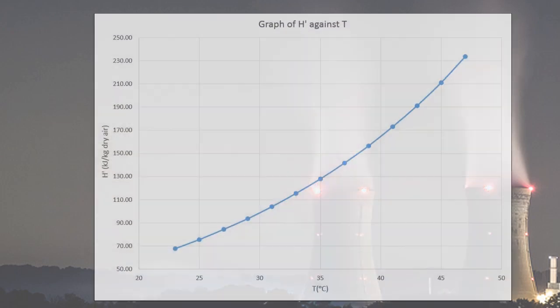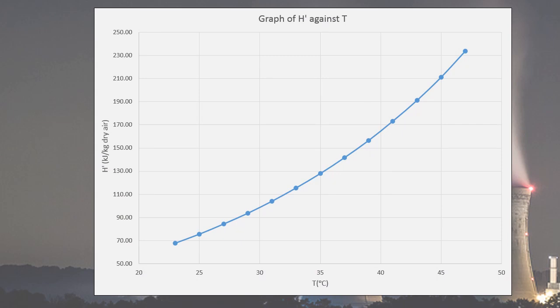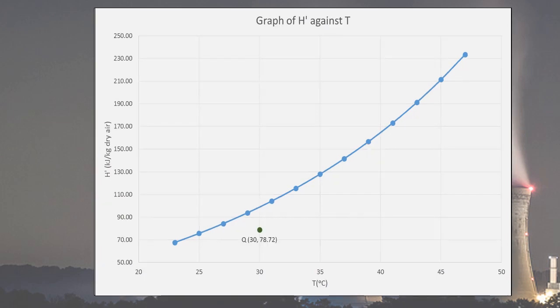Next, plot a graph of H prime versus T, then locate point Q at point 30 and 78.72.